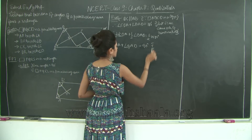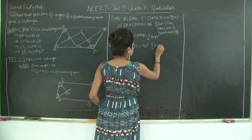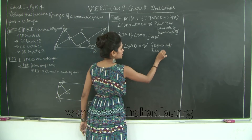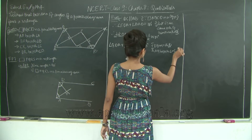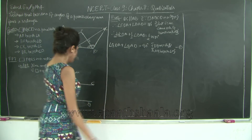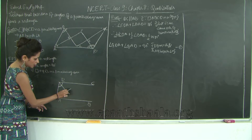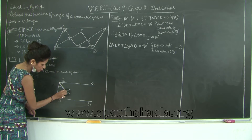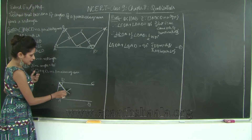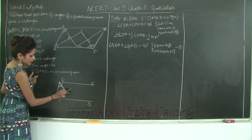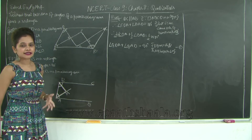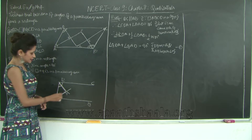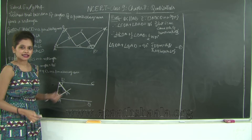Marking this as statement 1. Now in triangle QAD, we have angle QDA plus angle DAQ plus angle AQD equals 180 degrees, because the sum of angles of a triangle is 180 degrees. But we have just proved that angle QDA plus angle QAD equals 90 degrees. Therefore angle AQD equals 180 minus 90, which is 90 degrees.